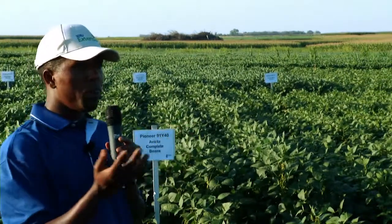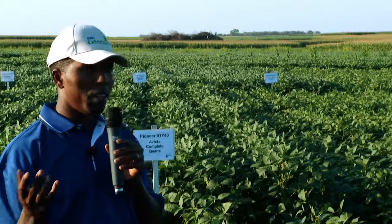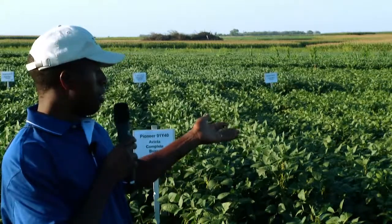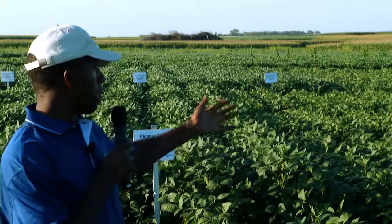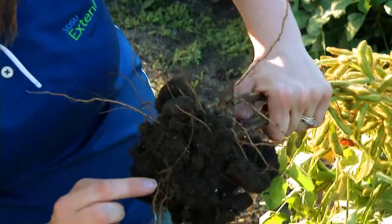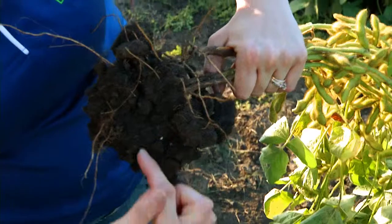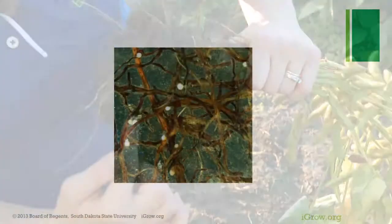It does not cause obvious symptoms that you can tell. Here we have a very good demo: a resistant cultivar, Pioneer 91Y40, and the susceptible one, 91Y30. By looking at the two, there's no difference — you can't tell that cyst nematodes are causing any damage on these plants. But you would be surprised when you dig how many cysts you can see on the roots.